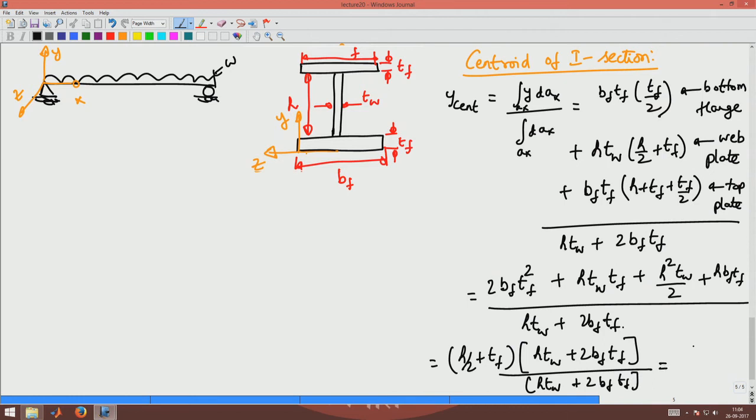Similarly now, Z centroid would be integral Z dA divided by integral dA. That is going to be Bf times Tf times the Z centroid which would be Bf by 2 for the bottom flange.